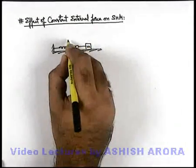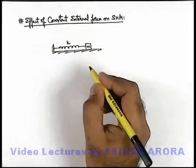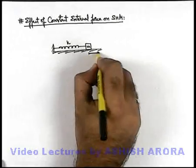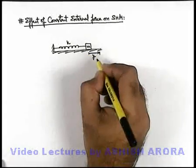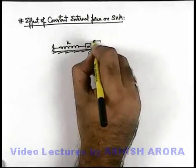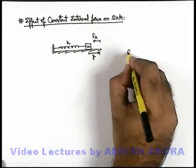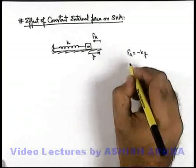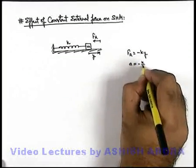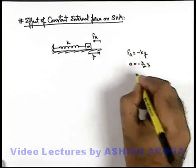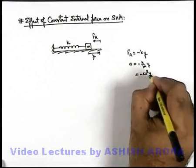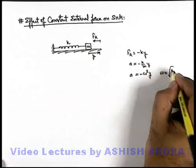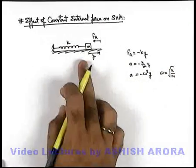The block is of mass m and the spring has a force constant k. If the block is slightly displaced by distance y and released, it will experience a restoring force given as minus k·y. The acceleration of the block will be minus k/m times y, which can be equated to minus omega squared y, giving omega equal to root of k/m, from which we can find the time period of oscillation.